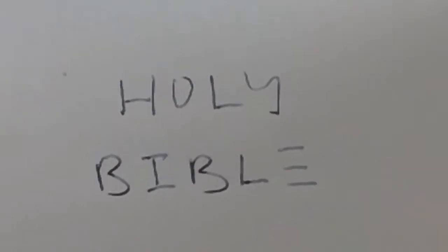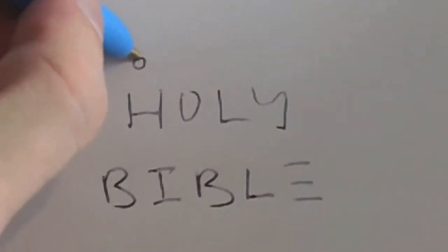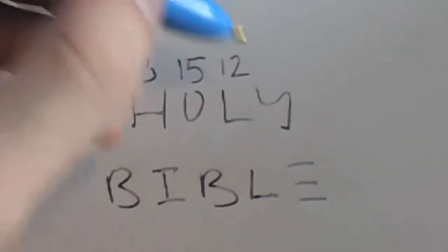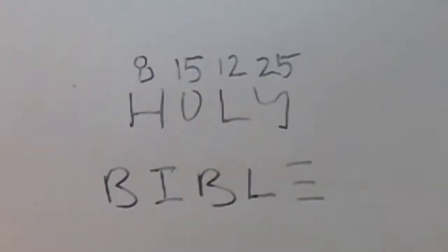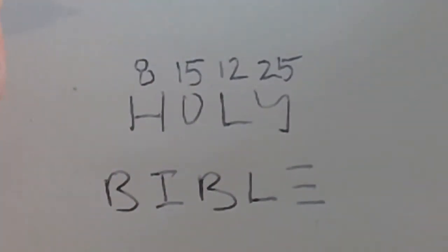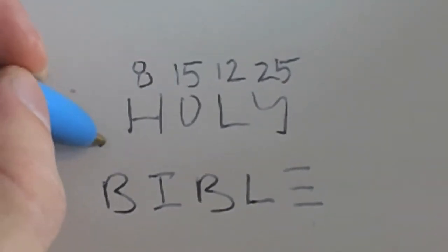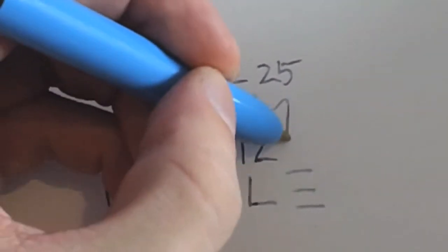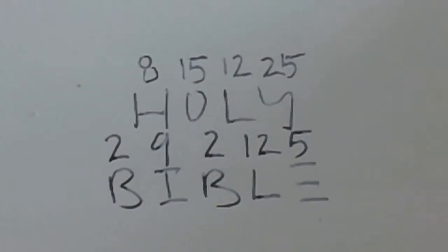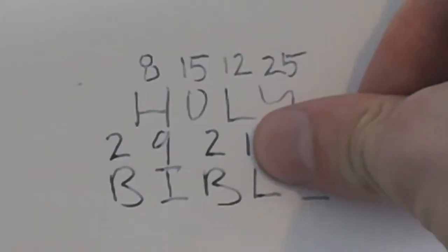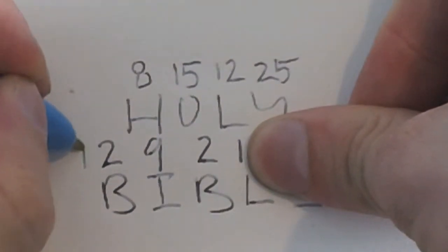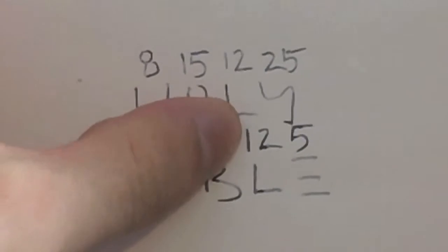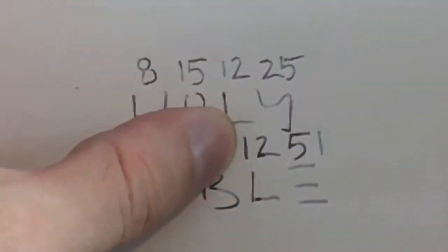Now I'm going to show you something about the Holy Bible. H is the 8th. O is the 15th. L is the 12th. Y is the 25th. Do you recognize 1225? That's Christmas Day. Pretty neat. Now, Bible: B is 2, I is 9, B is 2, L is 12, and E is 5. All this is missing is a 1 to have 12921. And over here, all this is missing is a 1 to make 1251.